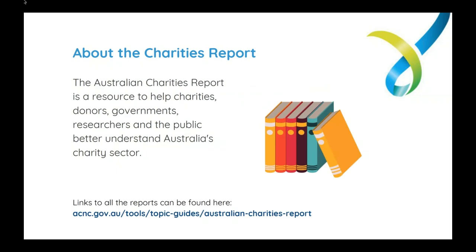Tim, you did a lot of work on the research here. Can you let people know where the data comes from that produces this Australian Charities Report each year? Each year, charities are required to submit an annual information statement to the ACNC, and that's what we've used in completing this report. We used actually over 47,000 annual information submissions. Obviously there's a cutoff date to do any research, so we had to stop at a certain point — we analysed the data in February this year.